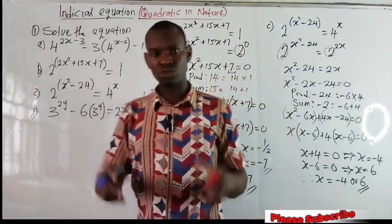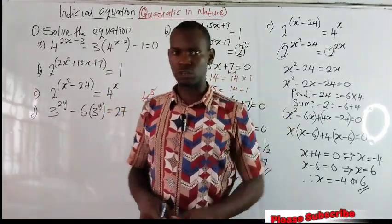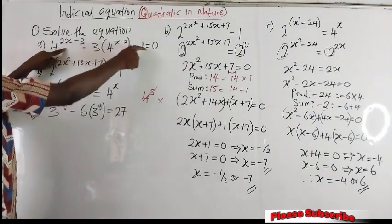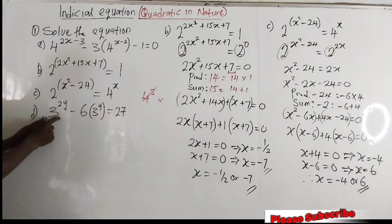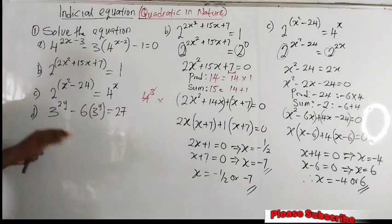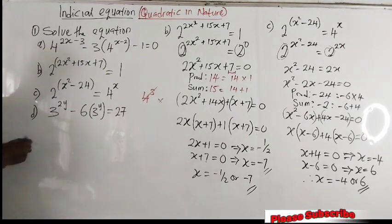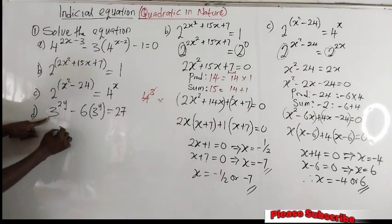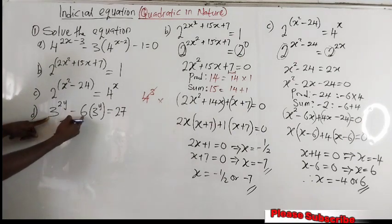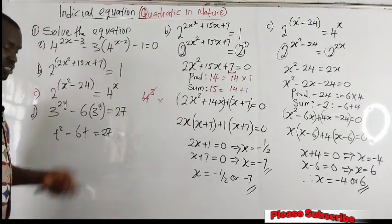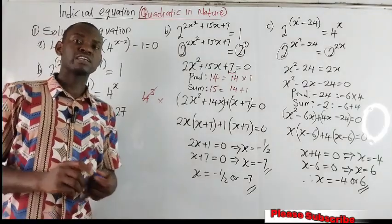Now to the next equation, I will show you how to go about this and leave you to solve it. This has already been reduced to one single power. What you need to do is import any variable of your choice and substitute for 3 raised to power y. Let's assume we are using t. You will have t raised to power 2 minus 6t equal to 27. From this point, I believe you can simplify it yourself.